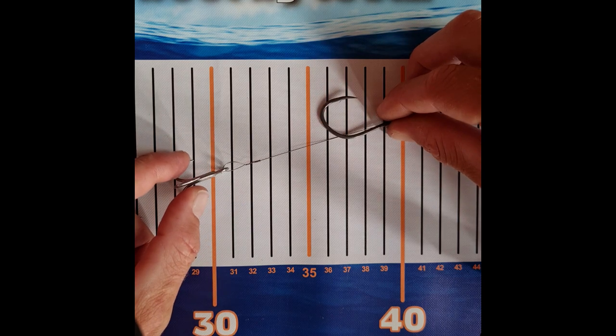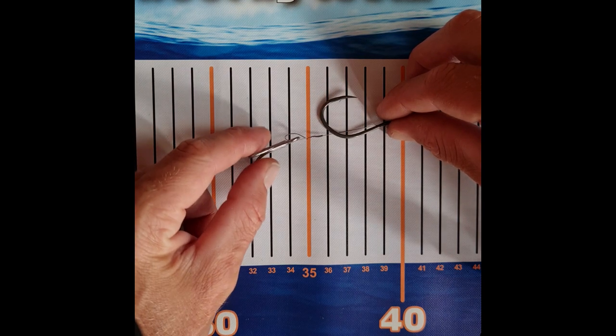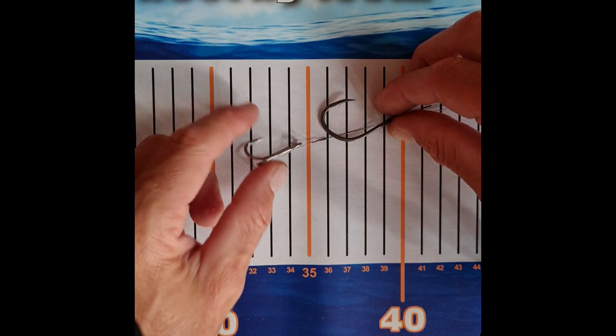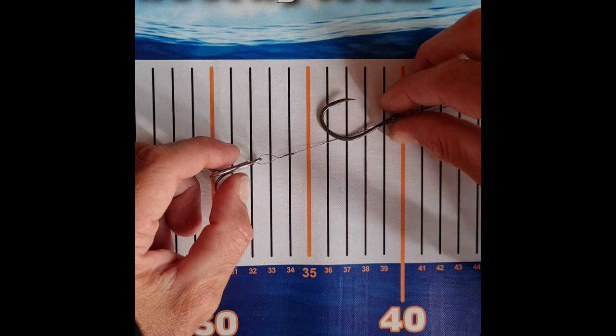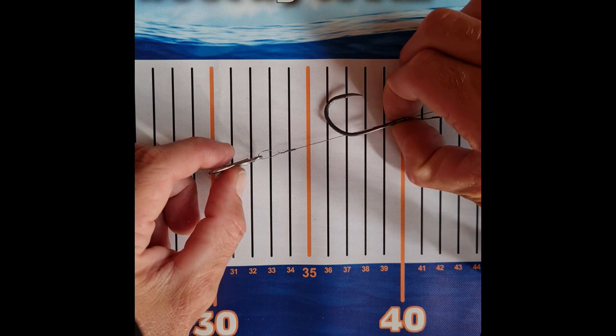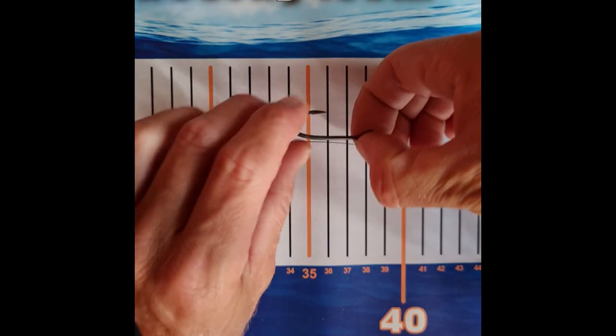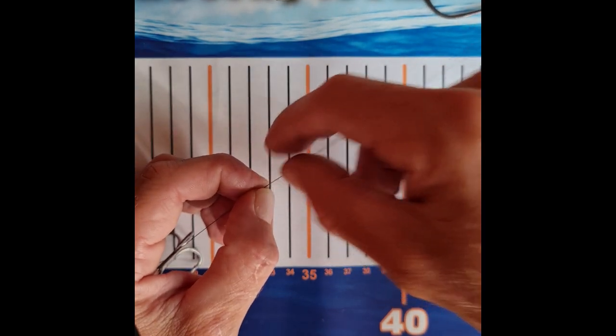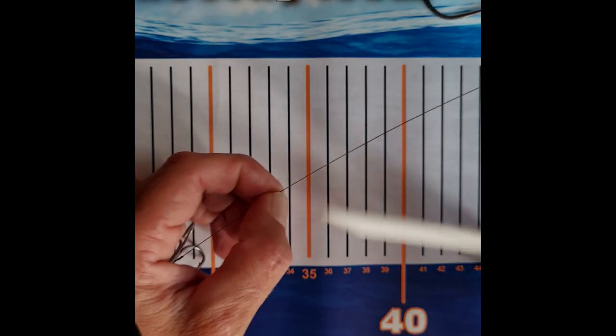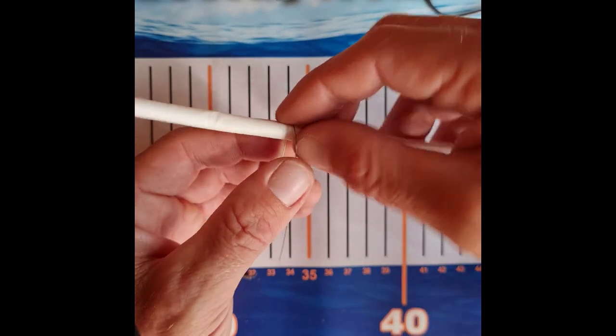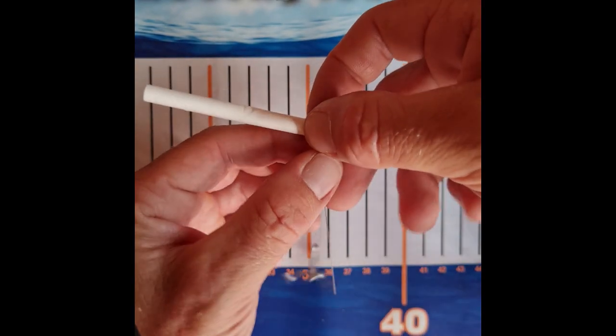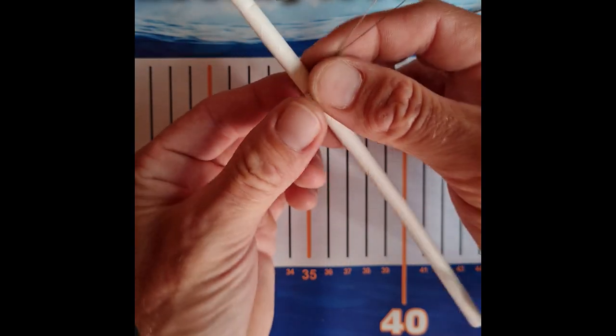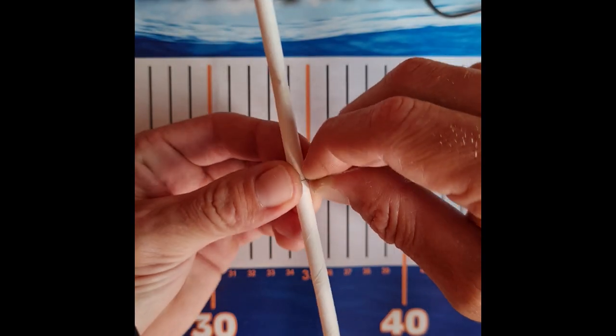You don't want it too far back because it's not going to swim properly, and you don't want it too far forward because you're going to miss fish. So you want to get a good rough estimate and then give it a pinch. So that's that, so I know where the loop should go. Get your straw, wrap it around very carefully. You've measured it, you know where the loop should be.